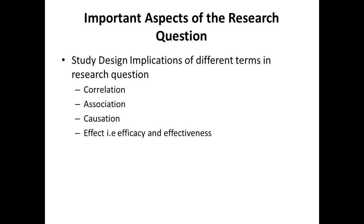There are also study design implications of different terms used in the research question. For example, terms such as correlation, association, causation, efficacy, and effectiveness cannot be used loosely in the stem of the research question — they have specific study design implications. We need to understand what each of these terms means and their study design implications, and we will talk about them in detail in subsequent talks.